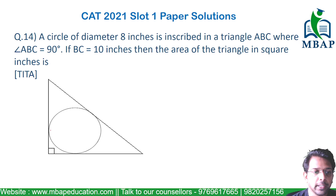Now, what has been given to you? The radius of this circle inscribed in the triangle is 8 by 2, which is 4. So, this will be 4, this will be 4, this will be 4 and this will be 4.